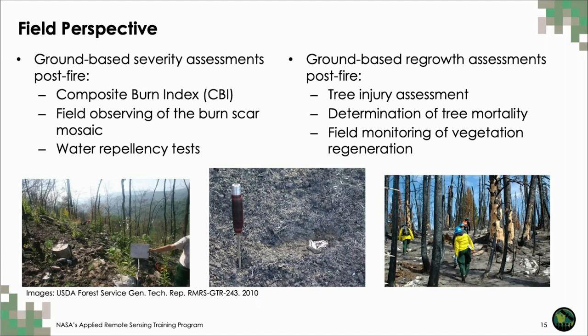Before we dive into satellite sensor data for post-fire assessments, I want to mention some ground-based methods that we attempt to approximate with remote sensing. Field observation of the burn scar mosaic is a typical method for defining a detailed burned area. Field burn severity assessments often complete a Composite Burn Index, or CBI, which was developed to assess fire effects on vegetation and soil. CBI plots rate burn severity for substrates, herbs, low shrubs and small trees, tall shrubs and sapling trees, intermediate trees, and big trees.